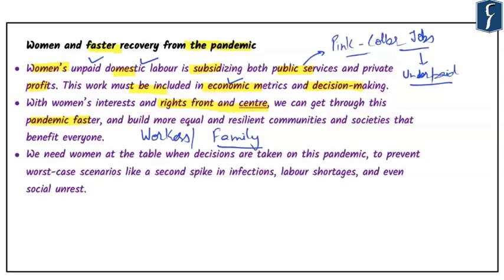The author highlights that there is a need for women's interests to take precedence over everything else. If we do that, we can get through this pandemic faster and build more equal and resilient communities and societies that will benefit everyone. Last but not least, we need to democratize institutions by ensuring women are at the table when decisions are being taken on this pandemic.